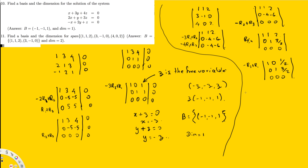Therefore, the basis is equal to the original first row (1, 1, 2) and the original second row (3, -1, 0). The dimension is the count of linearly independent vectors, which is 2. So dimension = 2. That's the final answer.